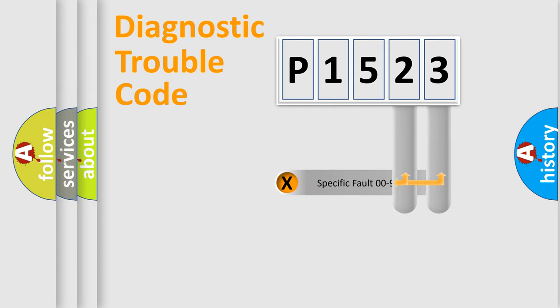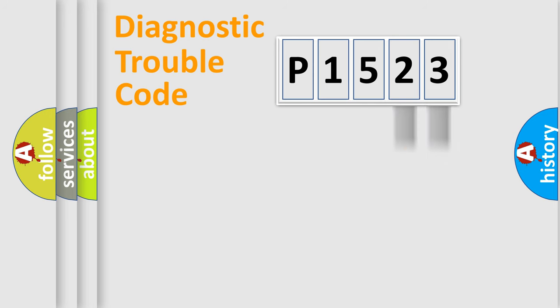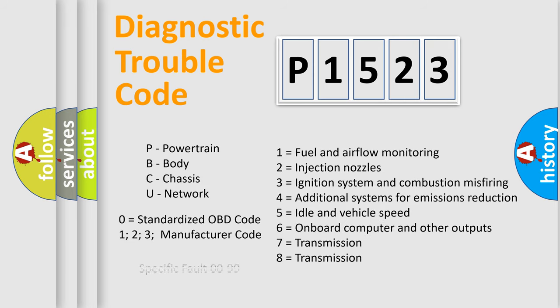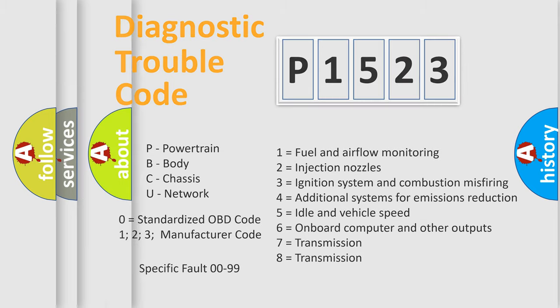Only the last two characters define the specific fault of the group. Let's not forget that such a division is valid only if the second character code is expressed by the number zero.